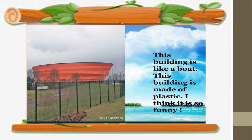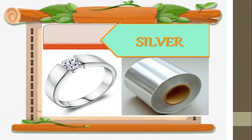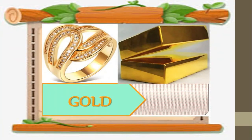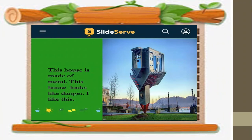Look at this building — it's like a boat and it's made of plastic, it's really funny. Here is silver and this is gold; we use gold and silver for example for jewelry. This is metal — look at this building, it's made of metal, but I see that it's really dangerous.